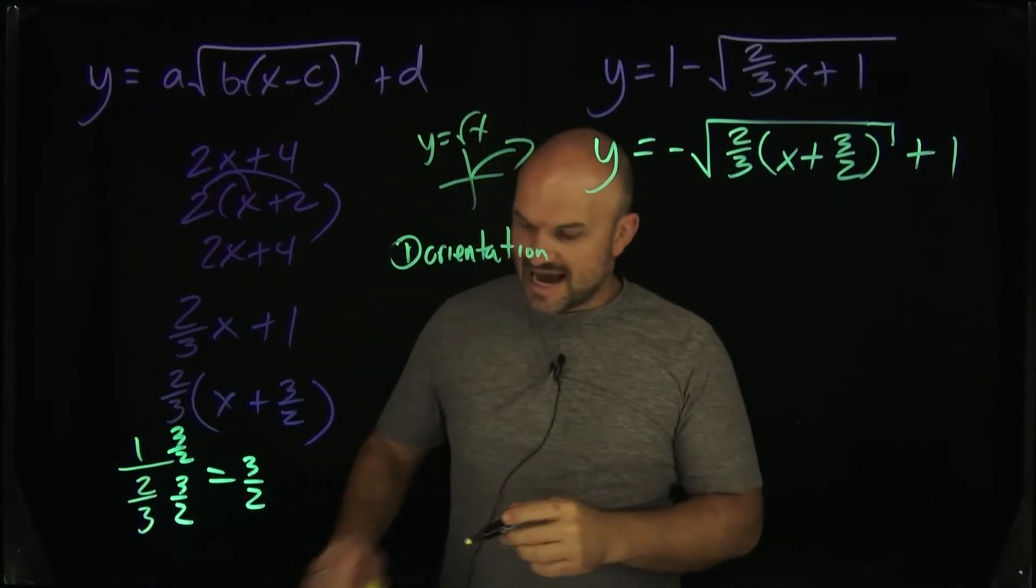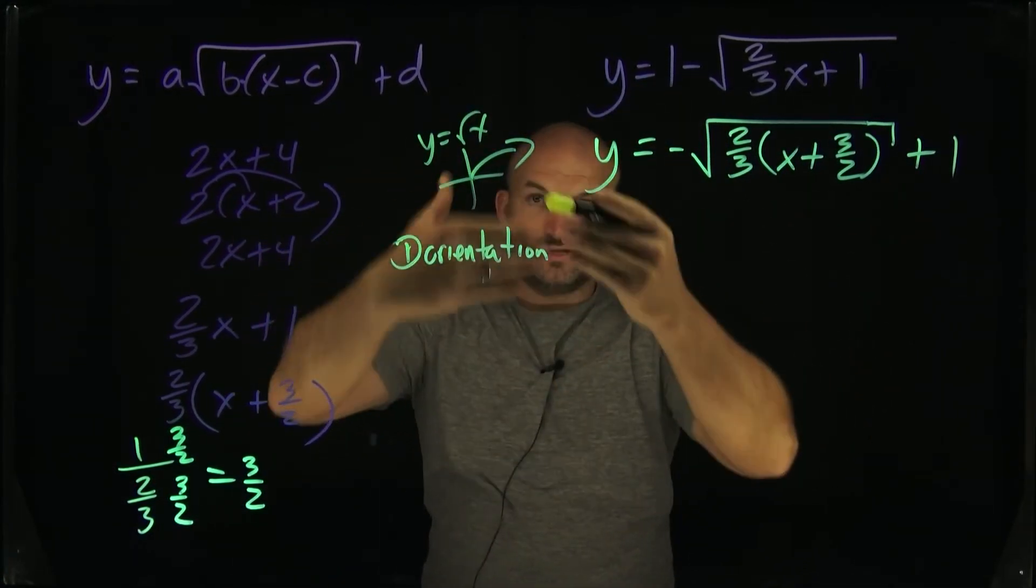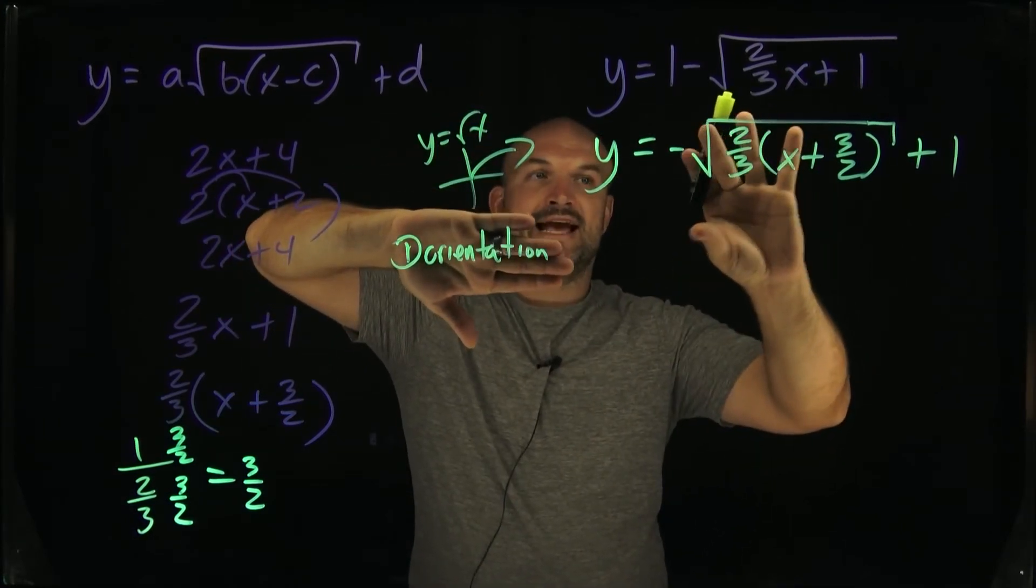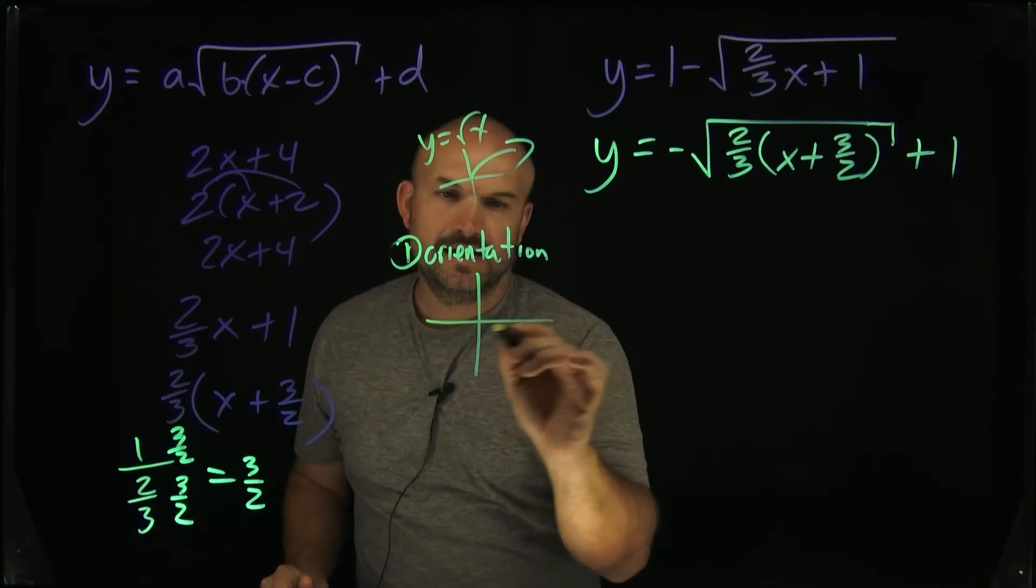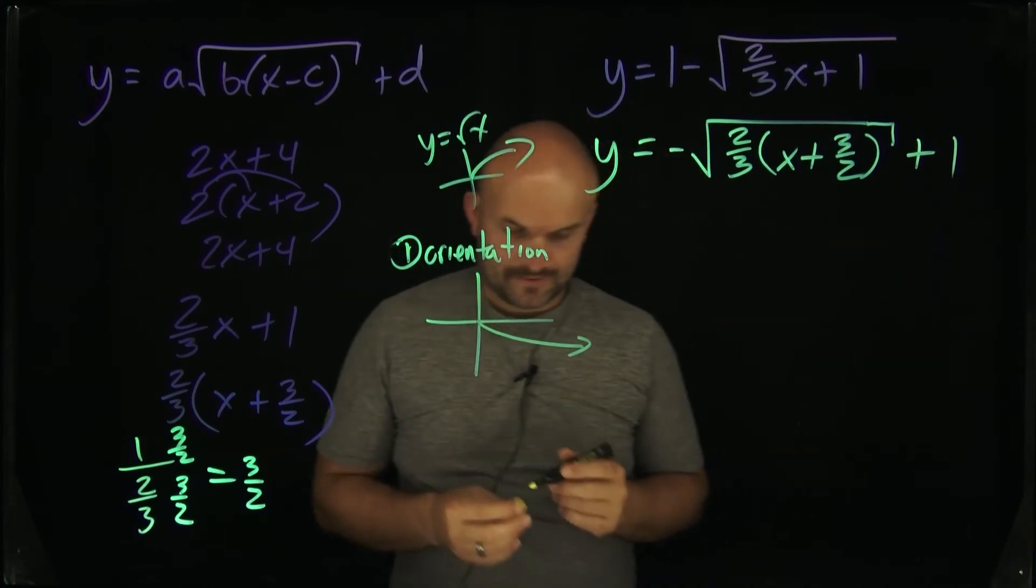Okay? So now what's happening here is this graph is being reflected about the x-axis, right? So take this graph, it's being reflected about the x-axis, and then we're having a horizontal stretch of two-thirds. So I'm not going to be exact here, guys. I'm just going to say, all right, it's going to be a horizontal stretch. So it's going to be a little bit skinnier or something like that, right?